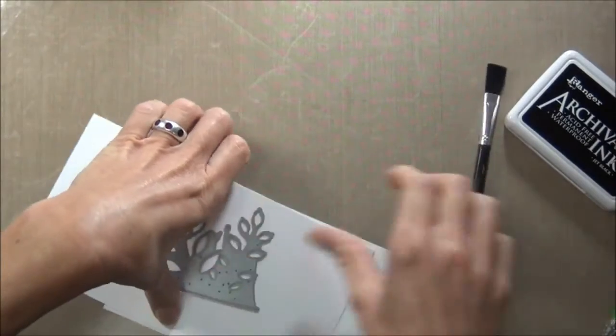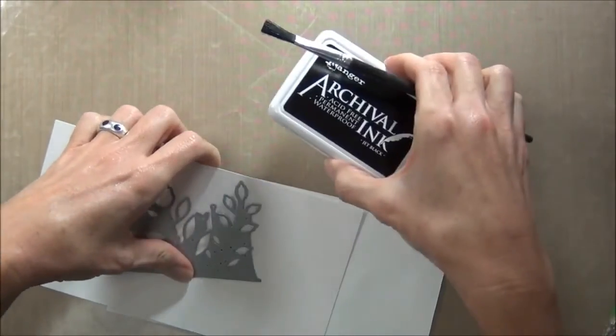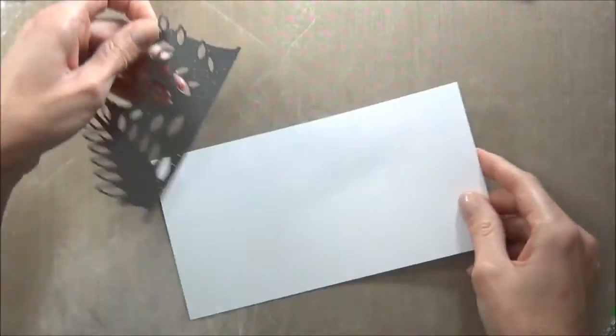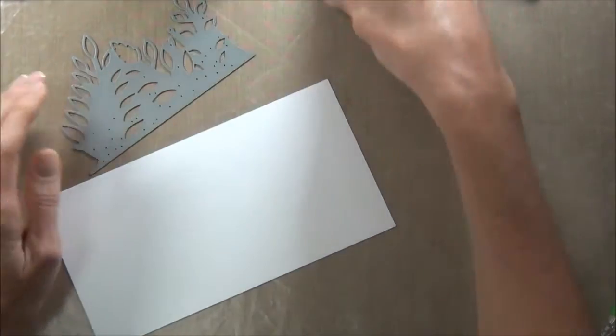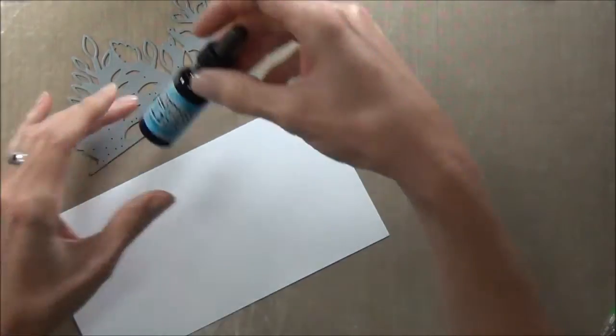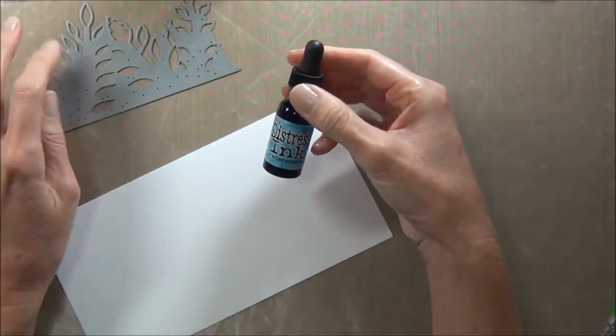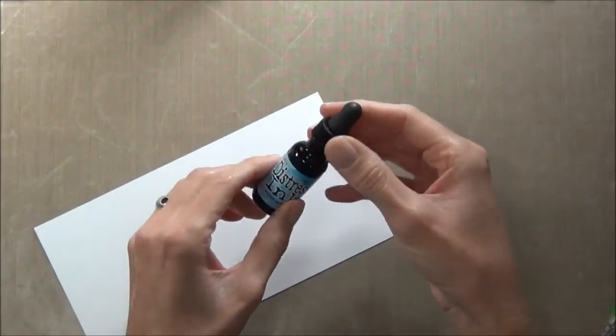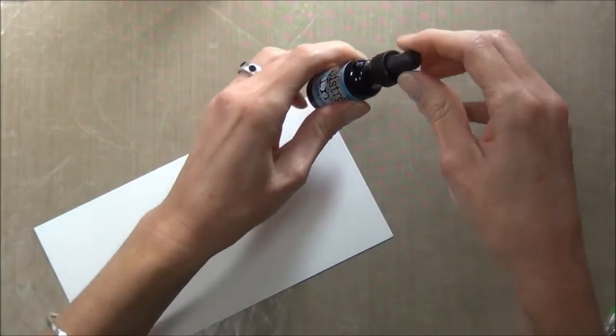So I'll get started. I'm going to be doing the die cutting after I've applied my color. I've got a little bit thicker cardstock here, and I want to do a technique called Color Wash. These Distress re-inkers are very strong in color, so you really don't need very much at all.